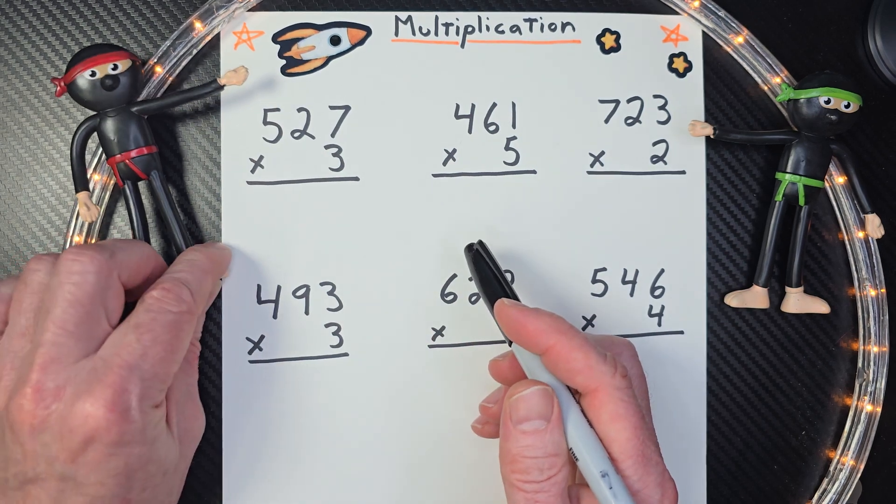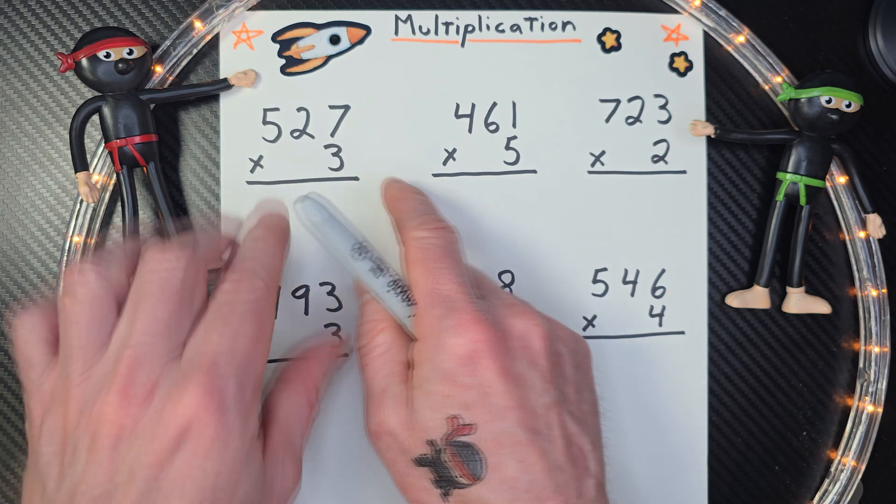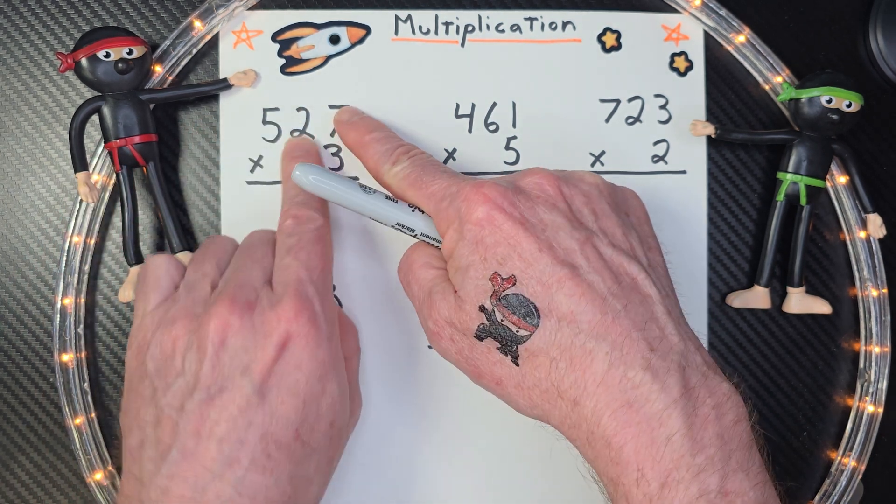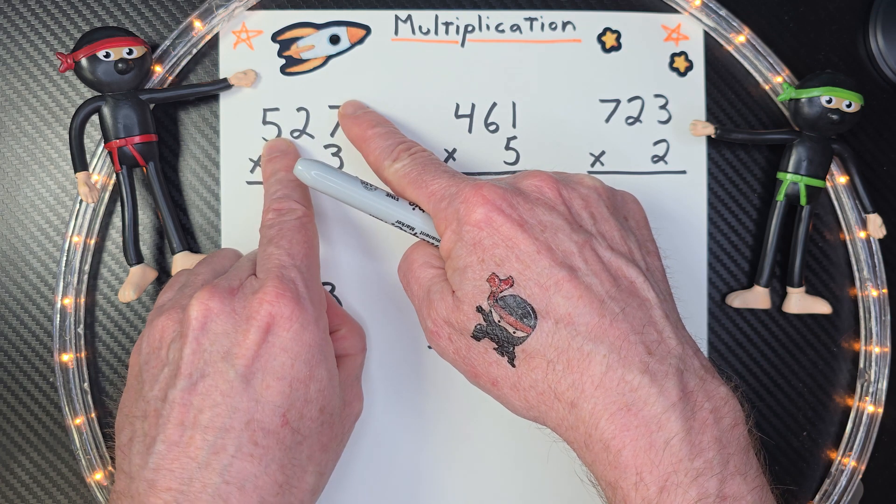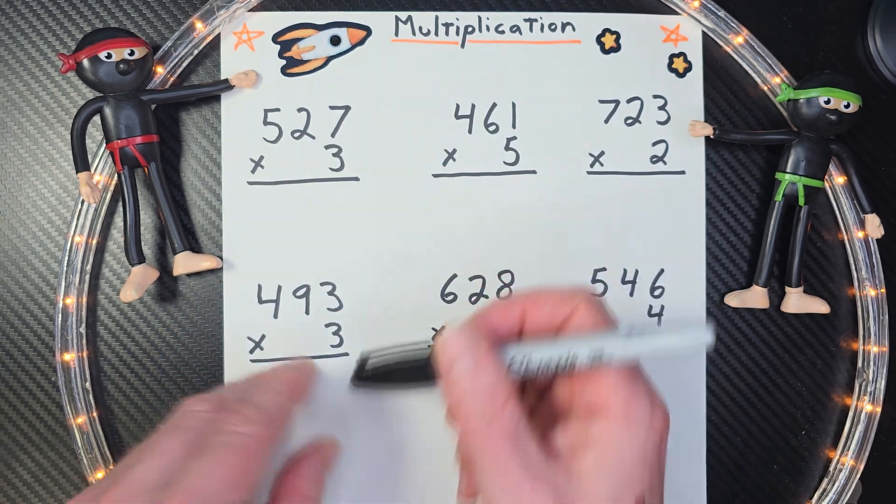Seven times three. What is seven times three? Remember, when we're doing multiplication with a bunch of numbers like this, we're first going to multiply 3 times 7, and then we're going to multiply 3 times 2, and then 3 times 5. I'm going to walk you through it. So it's going to be easy, cheesy, lemon squeezy, step by step.